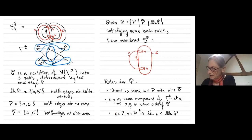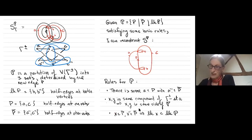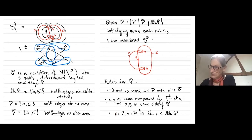Given this partition — as long as it satisfies some basic rules — I can reconstruct this space. Here's my edge p: b and b-inverse go at both ends; a goes from one end to the other; c goes from one end to the other. The rules for this partition allow me to fill in the rest of the picture — namely the rest of the tubes in this gamma complex.